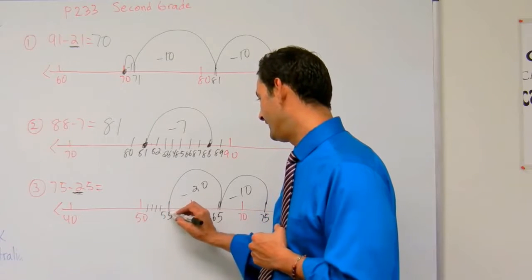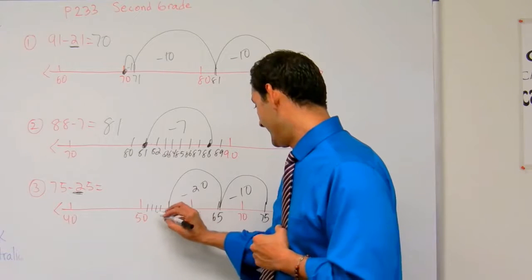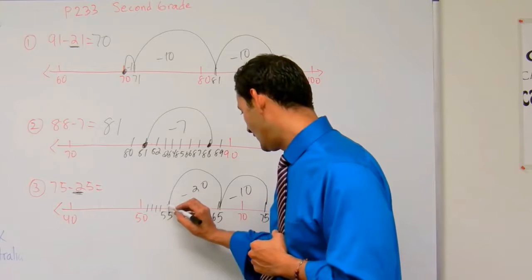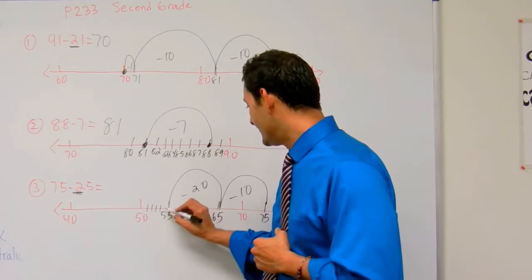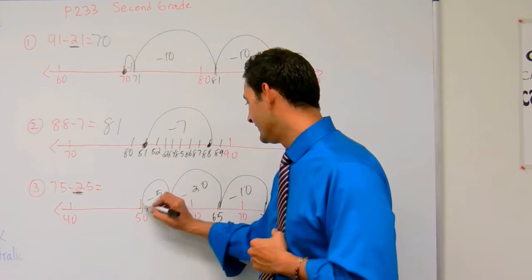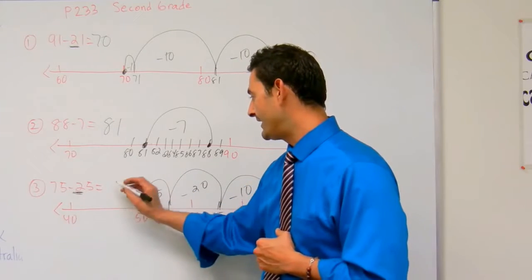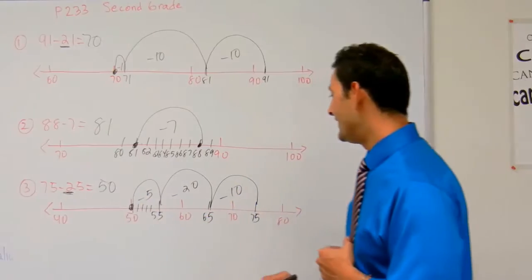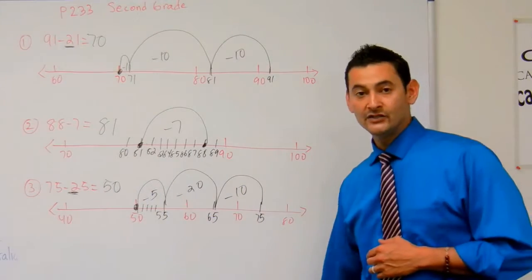Here we have 50. I'll count 1, 2, 3, 4, 5 right there. So I'm going to go 1, 2, 3, 4, 5 there, subtract, and 75 minus 25 equals 50.